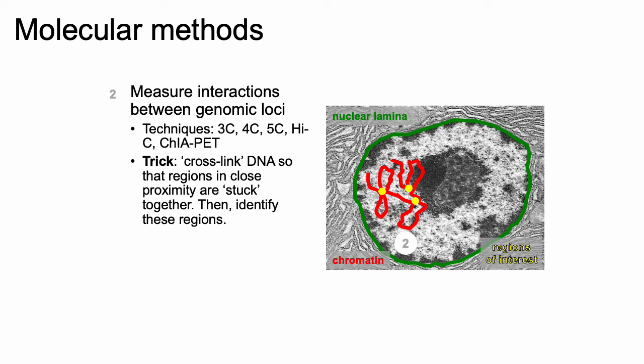That concludes our discussion of the DAM-ID assay. We'll now move on to different techniques used to measure interactions between genome loci. There are a large number of such techniques, including 3C, 4C, 5C, Hi-C, and ChIA-PET. Generally, all of these assays are predicated on the idea that if you cross-link DNA such that genomically proximal loci get cross-linked together, then the cross-linking results in them being stuck together, and you form a readout of sequences from both genomic loci. Mapping those reads to the genome tells you which genomic loci were in close physical proximity.